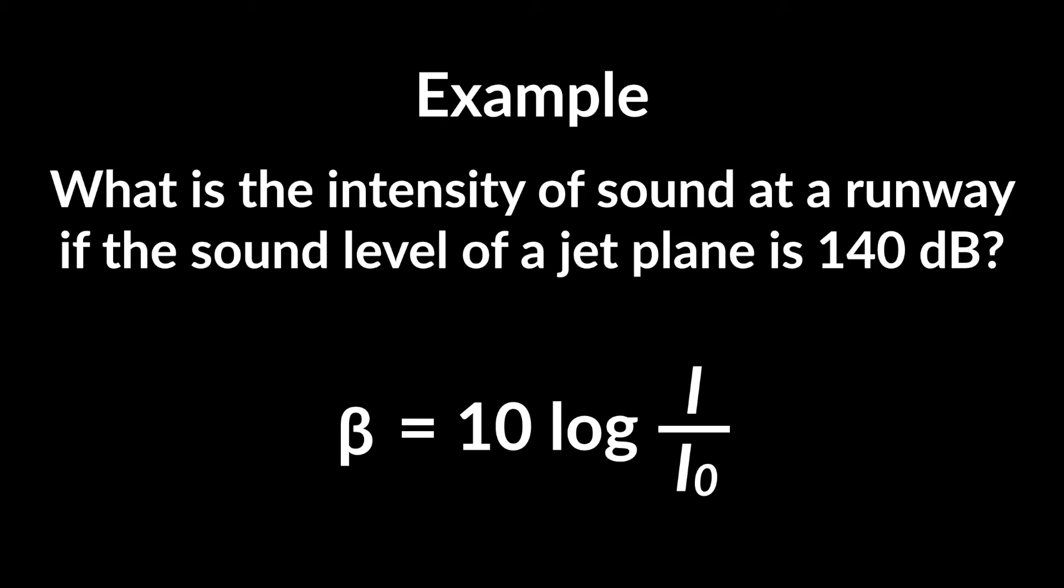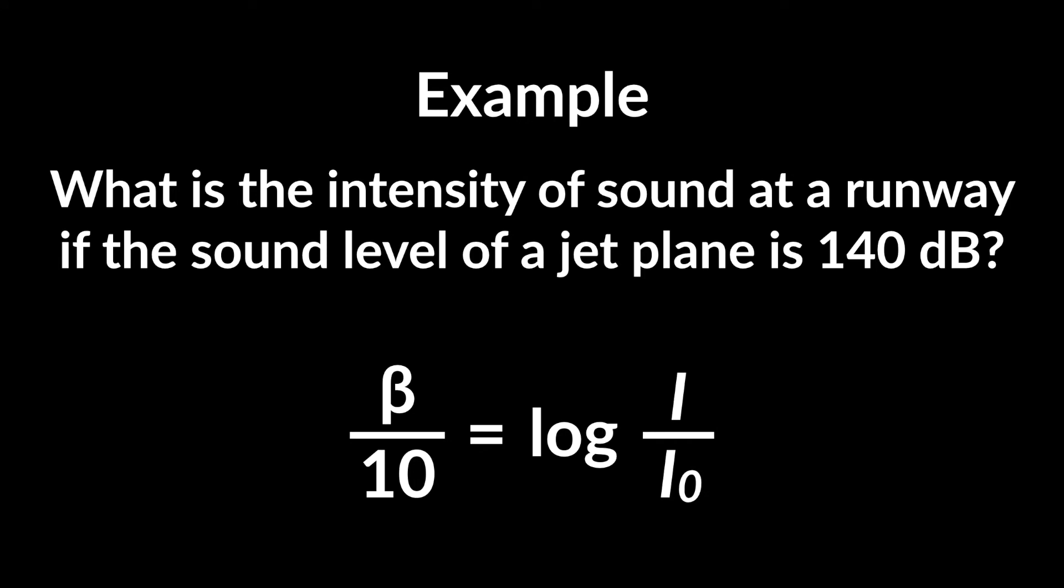What we can do is divide both sides by 10, and then to get rid of the logarithm, which is base 10, we raise 10 to the power of each side, and that will give us 10 to the beta over 10 is equal to I over I₀, and now we just multiply both sides by I₀, and we get that the intensity is equal to I₀ times 10 to the beta over 10.